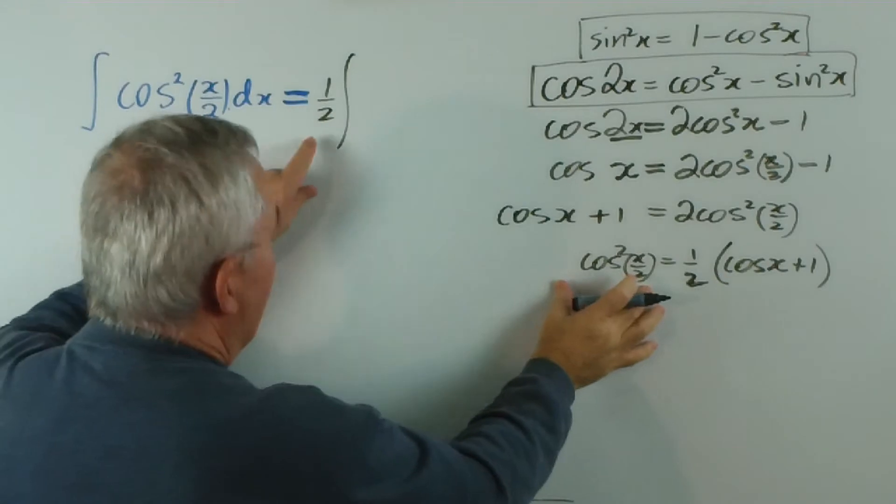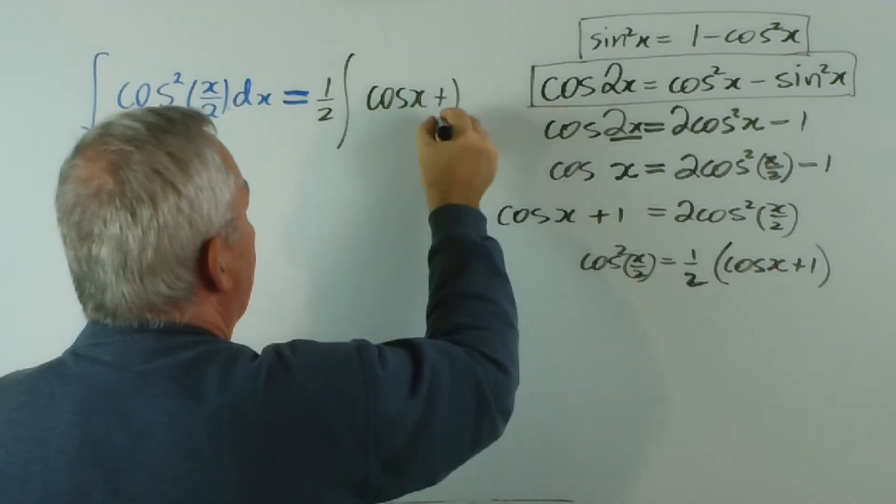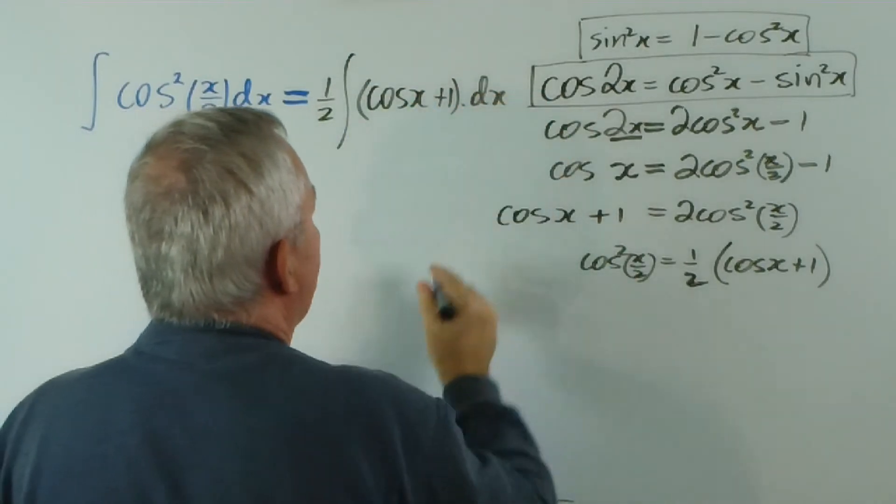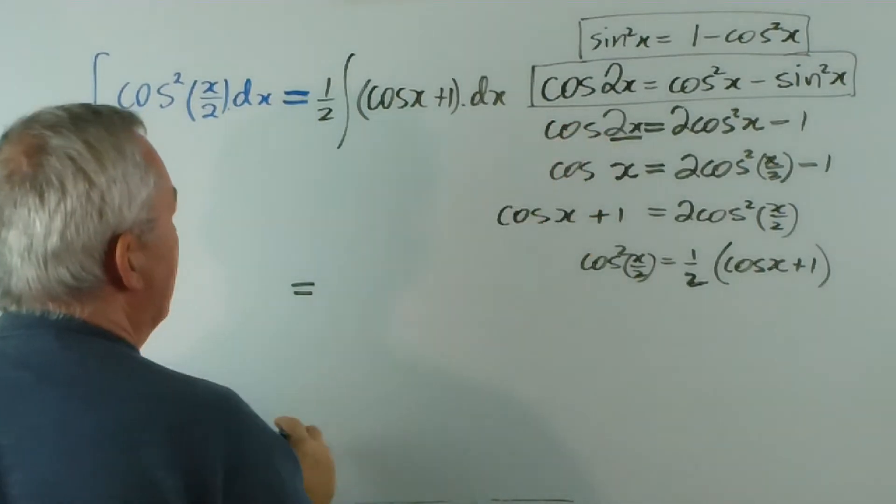So we replace this with a half cos x plus 1 dx. I'm going to move down the page here because this is encroaching a bit.